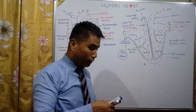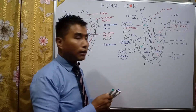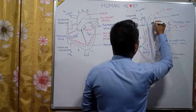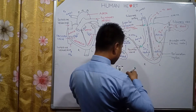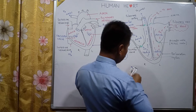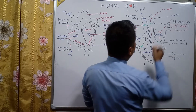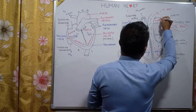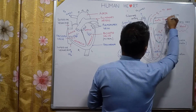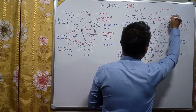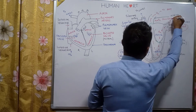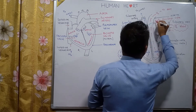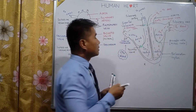To prevent the backflow of the outgoing oxygenated blood in the aorta, there is a valve present in the aorta which is known as the aortic semi-lunar valve.